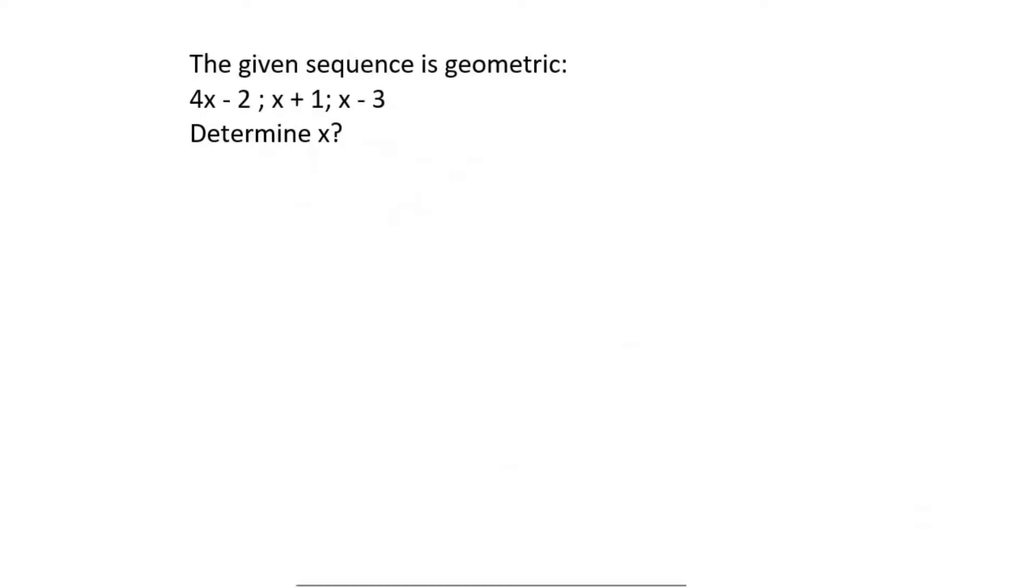They tell us in this question that we have a geometric sequence. A property about geometric sequences is that term 2 divided by term 1 will always be the same as term 3 divided by term 2.